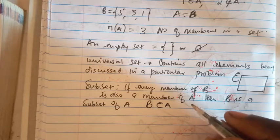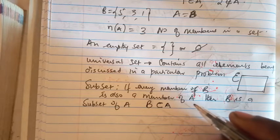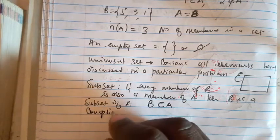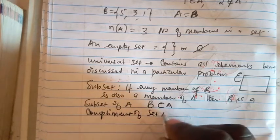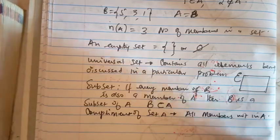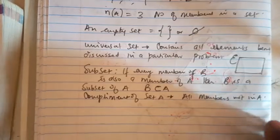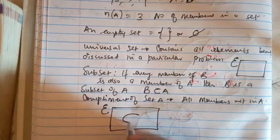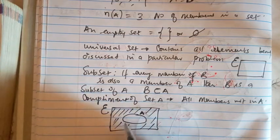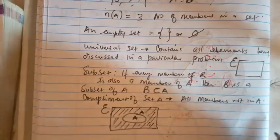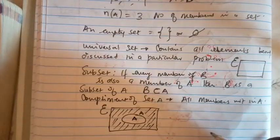The complement of set A is the set of all elements not in A. You could be discussing a universal set with many elements, and among those elements are members in set A. Anything that is outside A is the complement of A.